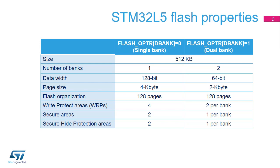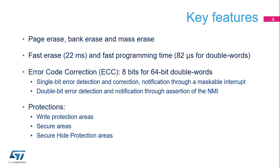Two secure areas can be defined, each supporting a secure hide protection area. Access to the hide protection area can be denied by setting a control bit. The flash memory supports page erase, bank erase and mass erase. A page, bank or mass erase operation requires only 22 milliseconds and the programming time is only 82 microseconds for a double word. An 8-bit ECC code is appended to a programmed double word. When reading, the code is checked to detect and correct single bit errors and detect double bit errors.